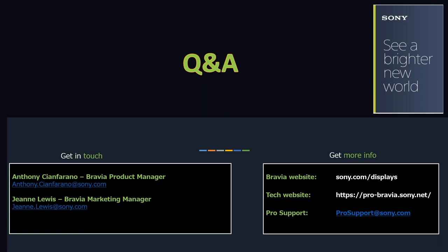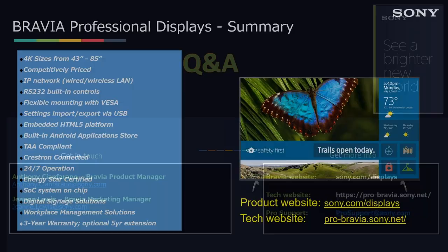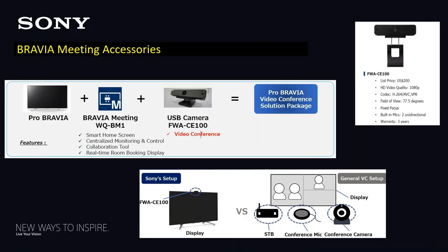Johnny asks what a typical bundle for a low-cost video conferencing solution would comprise. There's the display, plus the camera (around $200), plus the software ($300). So it's the display price plus approximately $500. And times two, since you need a second configuration to actually have a video conference with somebody. Steve asks if the software is one license per display — yes, it's a one-to-one ratio.